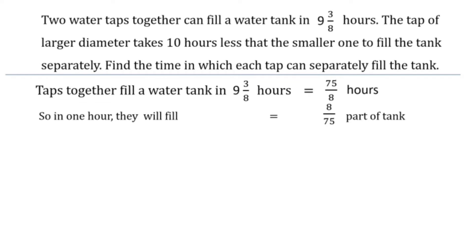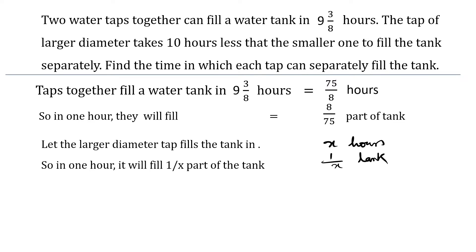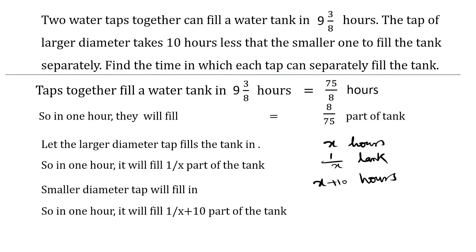It is exactly like: if a tank is filled in 2 hours, then in 1 hour its reciprocal — 1 over 2 — is filled. Now we assume the larger diameter tap alone can fill the tank in x hours, so in 1 hour it fills 1 upon x part. Similarly, the smaller diameter tap fills the tank in x plus 10 hours — because it takes 10 hours more — so in 1 hour it fills 1 upon (x plus 10) part.